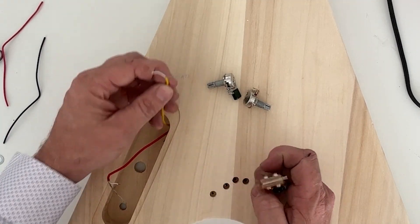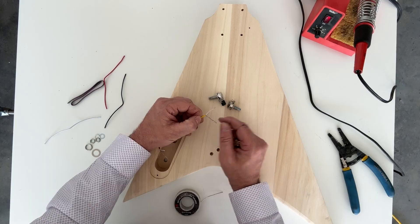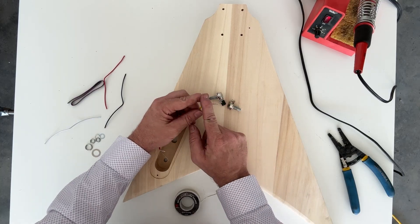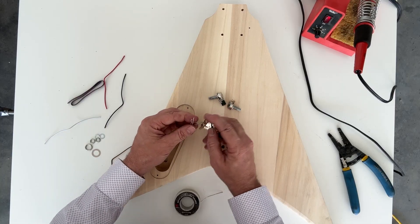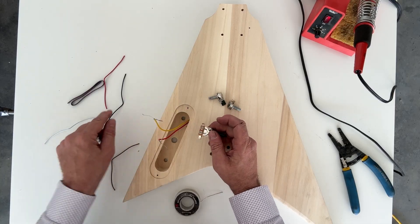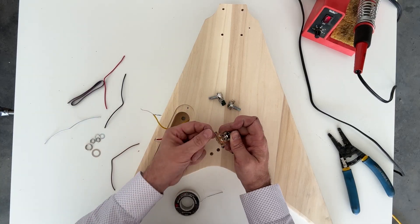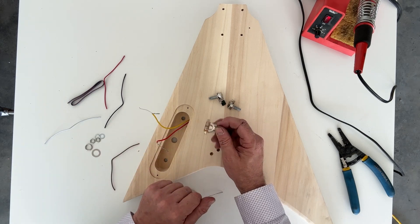The center is going to be our output that will go out to our volume pot, and the two outsides are for each of the hot leads on the pickup. The pickup wire has a bare wire and a shielded wire—the shielded is the hot and the bare is the ground. We're going to connect both of the grounds along with one extra wire to this thick lug, and then the hots to each side.